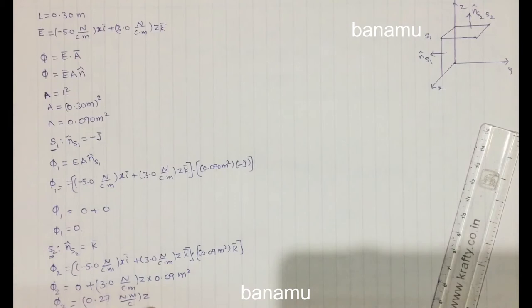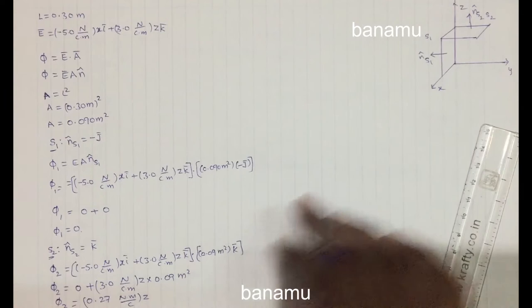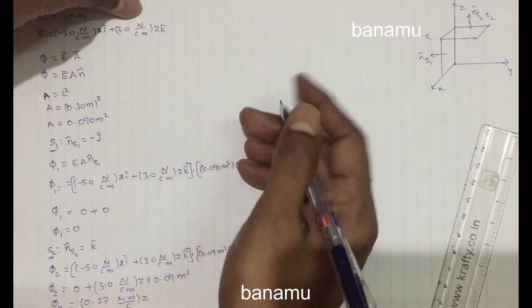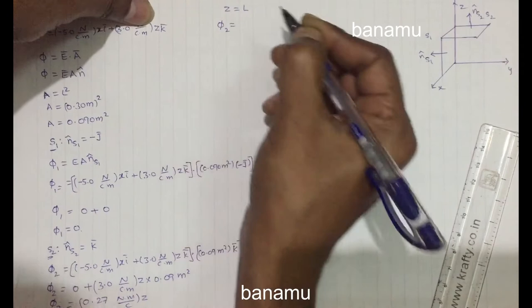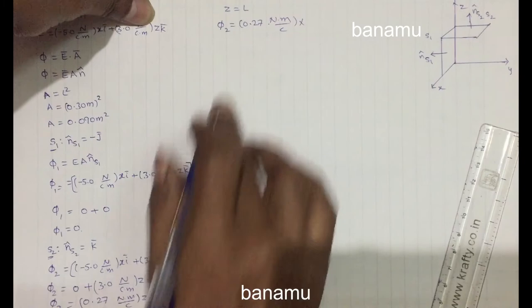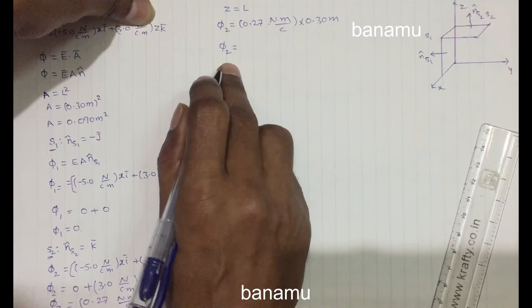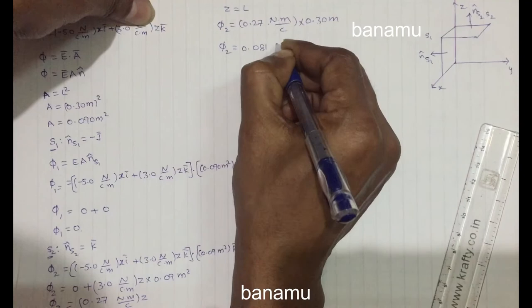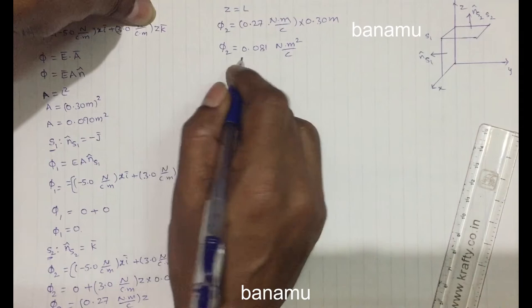At the top surface S2, z equals the side length of the cube, so z = L = 0.3 m. Therefore φ₂ = 0.27 × 0.3 = 0.081 N·m²/C. This is the flux through surface S2, the top of the cube.